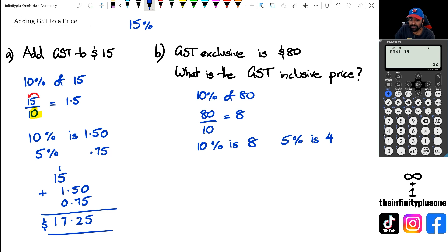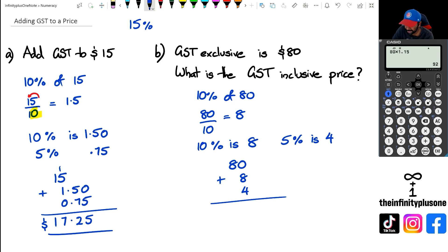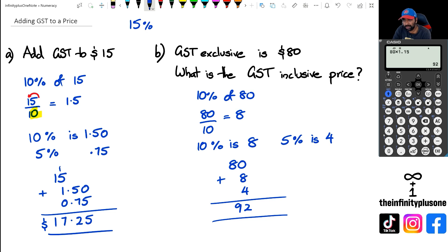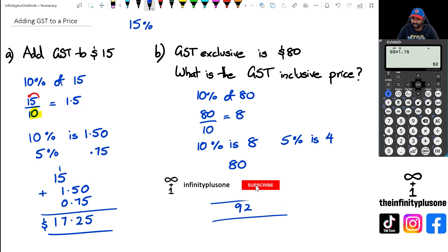So to add 15% to $80, I go 80 plus 8 plus 4, which gives me $92. As you can see, that matches. So to summarise: with a calculator just multiply by 1.15; without a calculator, the 10% and 5% trick works really well to add GST to a value.